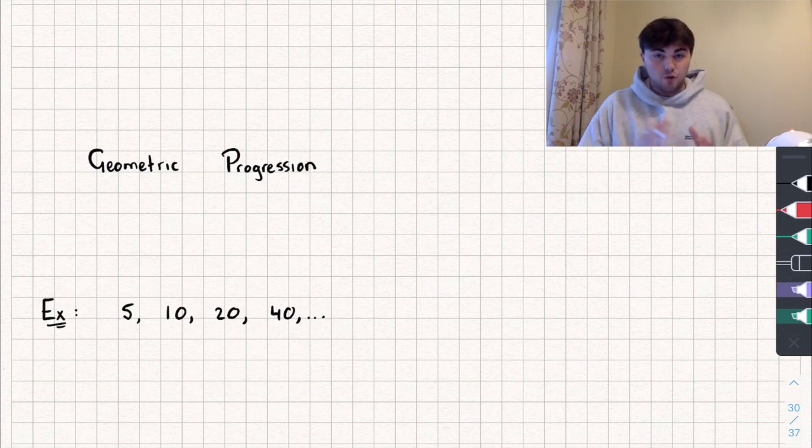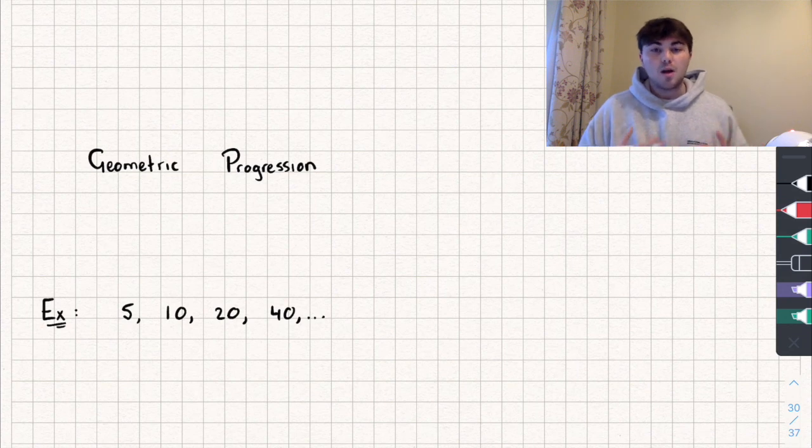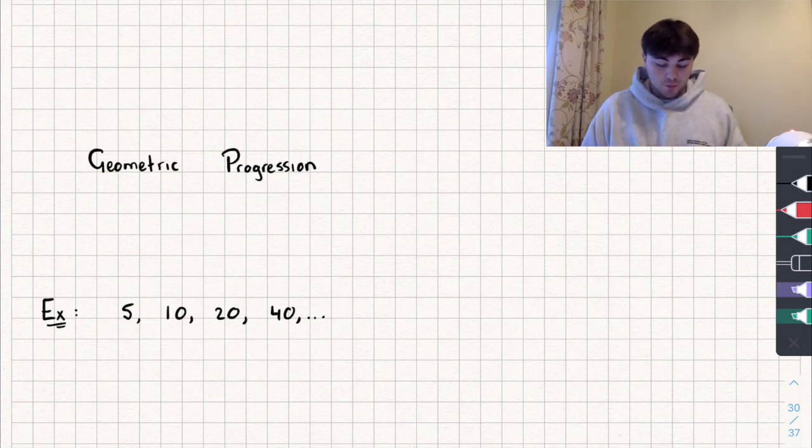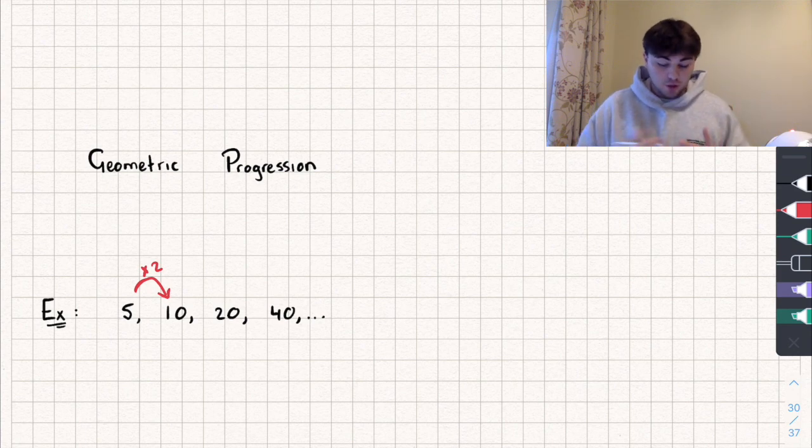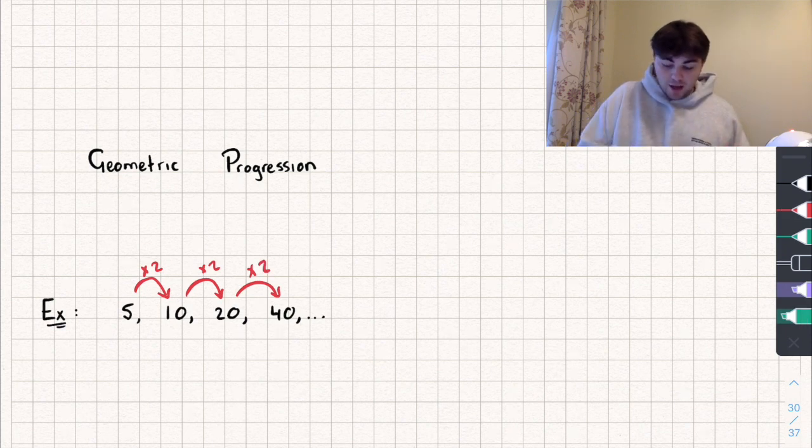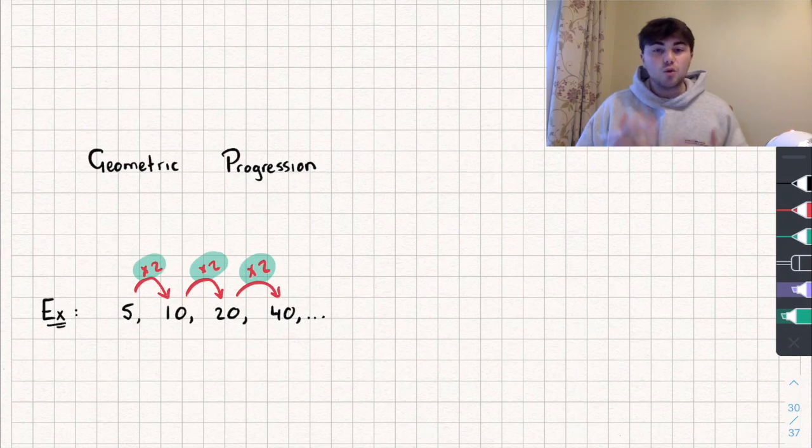And what makes it a geometric progression is, to get from one term to the next, we're multiplying by some constant value each time. So in this example here, which is a geometric progression, we're doubling it, so we're multiplying each term by 2 to get to the next. So 10 multiplied by 2 takes me to 20, 20 multiplied by 2 takes me to 40. And this constant value, this times 2 that we have, is called the common ratio of the geometric progression.